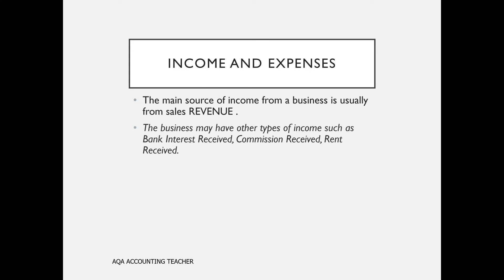We might have some other smaller sources of income. The business might receive bank interest, commission, or rent — anything that says 'received.' Not to be confused with receivables, such as trade receivables. So anything that says 'received' means that it's income, and wherever you see that on a trial balance, you should find that the number is in the credit column of the TB — that's going to be your other income.